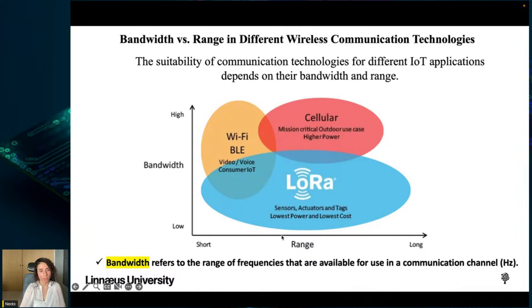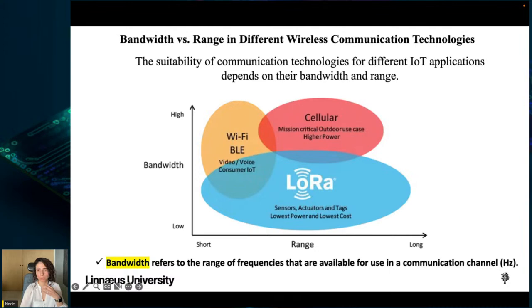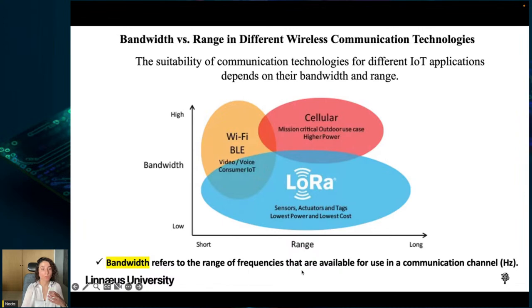Cellular communication has both long range and high bandwidth — compared to Wi-Fi and BLE it covers a longer range, and compared to LoRa it has higher bandwidth. Bandwidth refers to the range of frequencies available for use in a communication channel, measured in hertz, megahertz, or gigahertz.